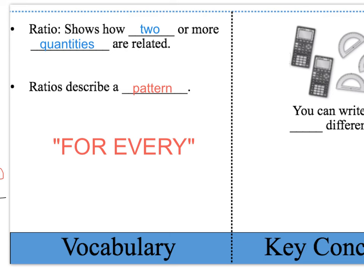You could also say, for every two chocolate bars there are five gummy bears. Once again, you're comparing two different items, two different quantities.